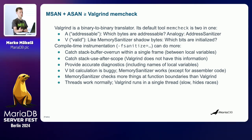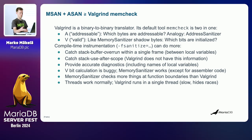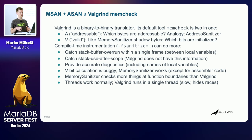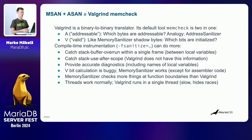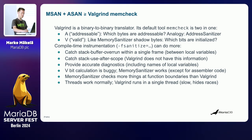Multi-threaded programs work better with compile-time instrumentation. Valgrind is essentially an emulator that is single-threaded — if you have multiple threads it will run them in a single thread with preemptive multitasking. If there are race conditions where one thread is freeing a buffer and another thread is using that buffer, it's much more likely you'll catch that error with address sanitizer than with Valgrind. Similarly for memory sanitizer errors.